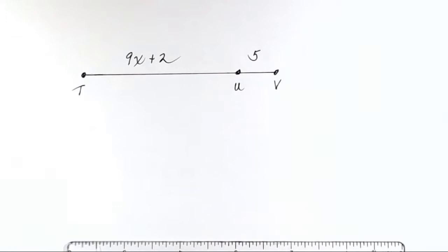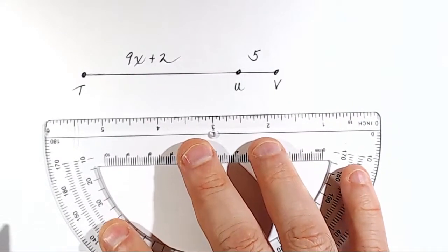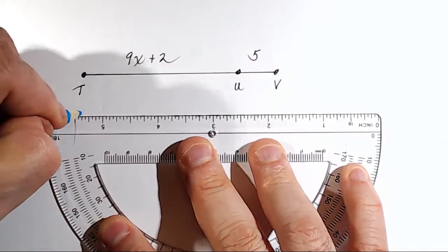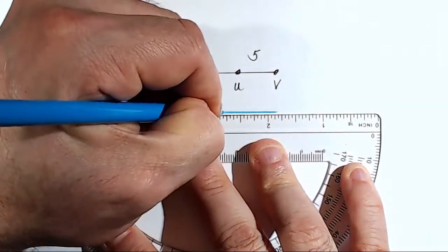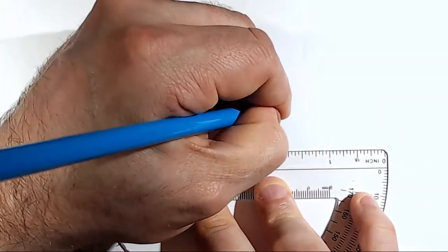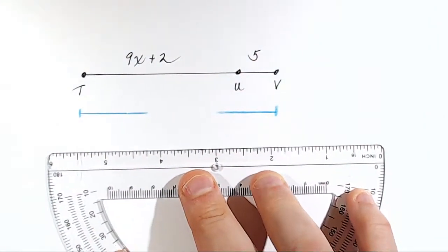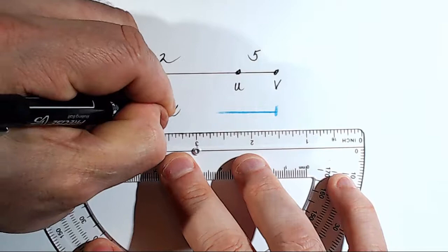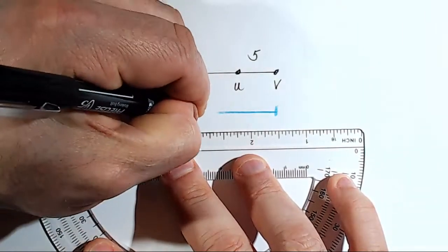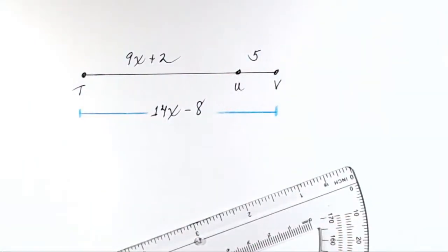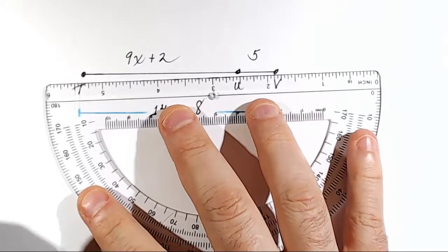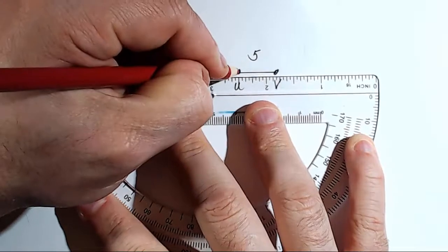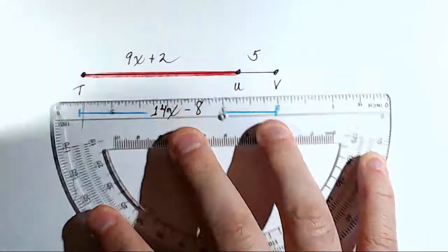Okay, and finally, we need this piece of the puzzle. We are given that the entire distance from T all the way to V, this whole distance here, is 14x minus 8. And we are asked to find, in this problem, the distance from T to U.